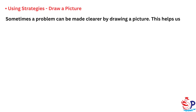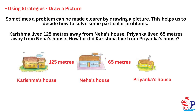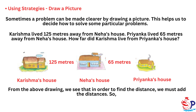Using strategies — Draw a picture. Sometimes a problem can be made clearer by drawing a picture. This helps us decide how to solve particular problems. Karishma lived 125 meters away from Neha's house. To find how far Karishma lived from Priyanka's house, from the drawing we see that we must add the distances. So, 125 plus 65 equals 190 meters.